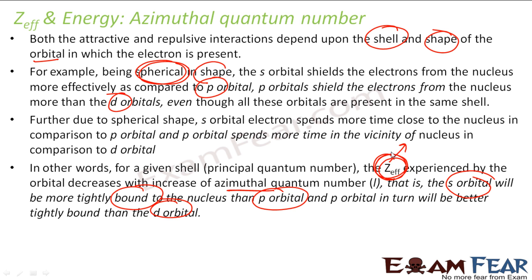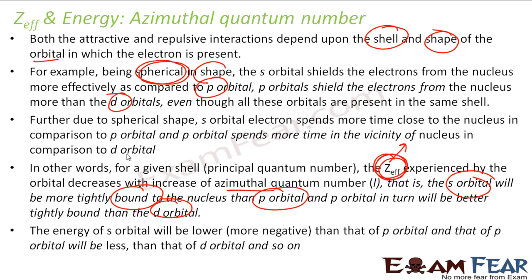The effective Z experienced by orbitals decreases with increase in azimuthal quantum number. The energy of the S orbital will be lower because it is more tightly held to the nucleus. If the nucleus holds an electron more tightly, the energy of that electron will be less — it will have less freedom. So the electron in the S orbital is more tightly held to the nucleus because of its shape, meaning the energy in the S orbital will be less than in the P orbital. More tightly held means more negative energy.